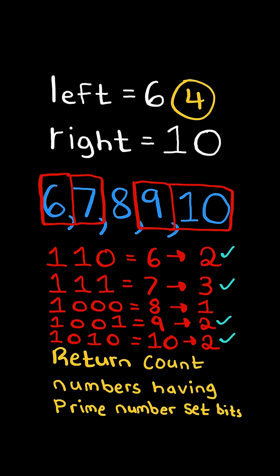So we return 4. We will solve this in O((right - left + 1) * log(num)) time to get the range and calculate the number of 1s in the binary representation.